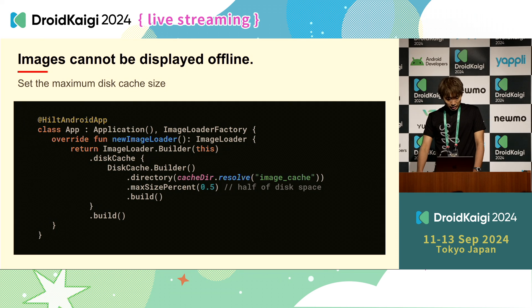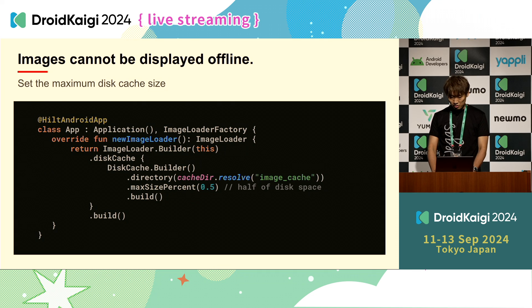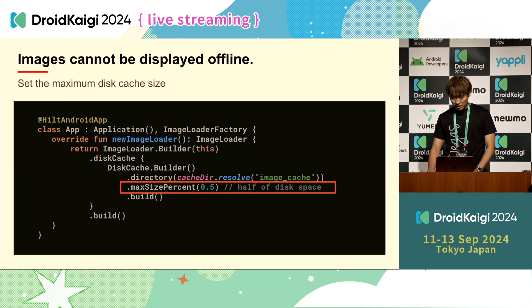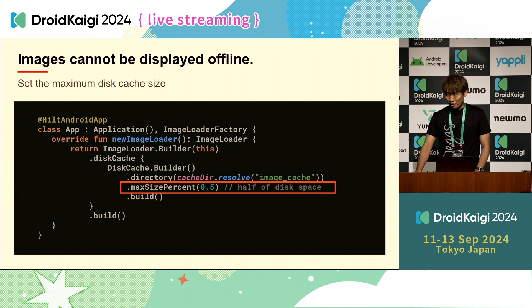One more thing: the cache size is set to a default value, which is small, so make sure you have the required capacity. You can set disk cache with your own cache size configuration in the image loader. In this code, the cache size is set to 50% of the device's disk space. With this configuration, enough cache size is maintained — it might be too large for you, but this is just an example. Configuration depends on the requirements of your app.